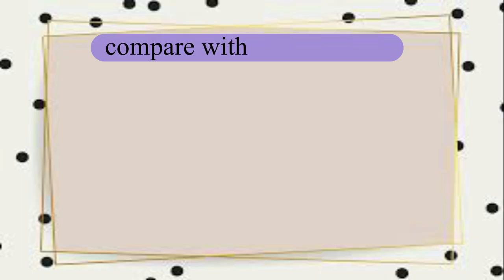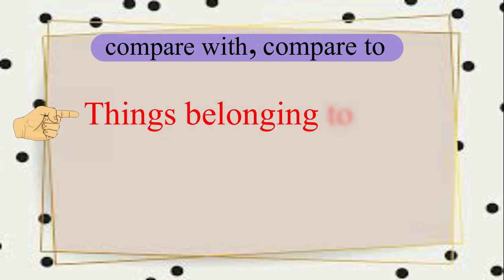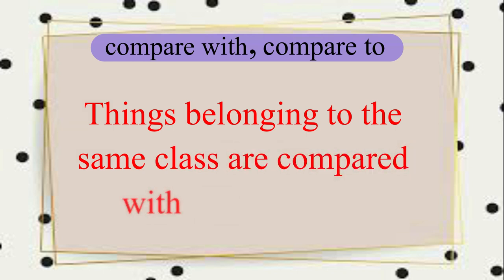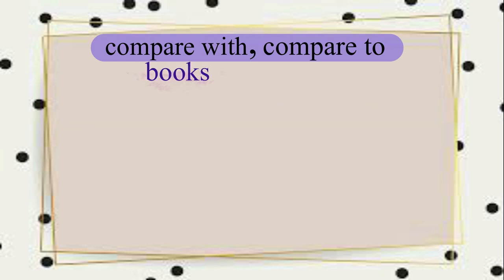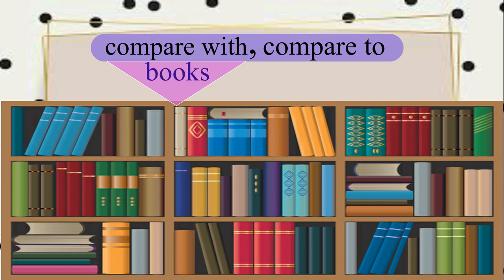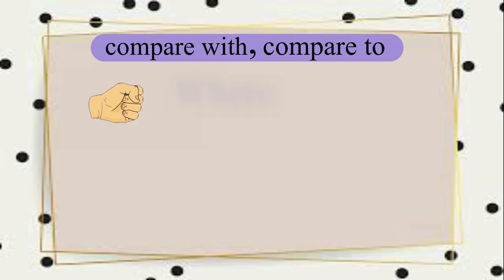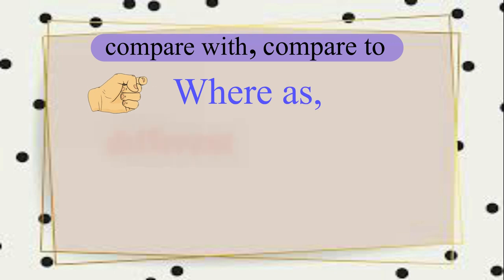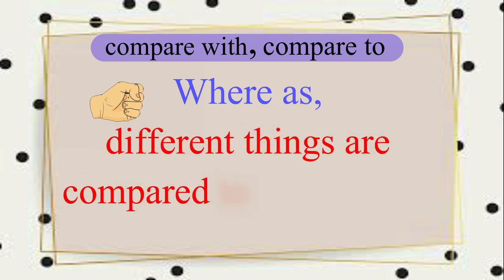COMPARE WITH and COMPARE TO. Things belonging to the same class are compared with one another, whereas different things are compared to one another.